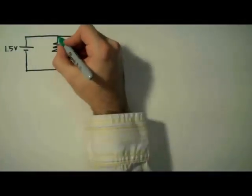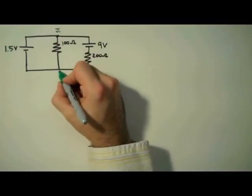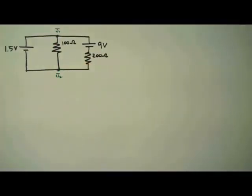As always, when using Kirchhoff's rules, we're going to start by labeling our junctions. I'm going to label mine J1 and J2.